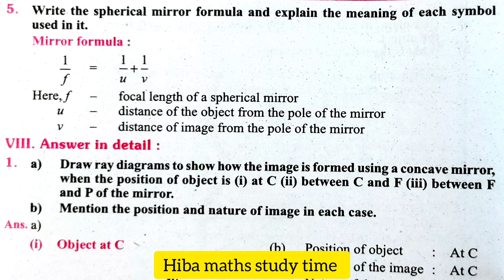Fifth question: write the spherical mirror formula and explain the meaning of each symbol used in it. Mirror formula: 1/f = 1/u + 1/v. Where f is the focal length of the spherical mirror, u is the distance of the object from the pole of the mirror, and v is the distance of the image from the pole of the mirror.